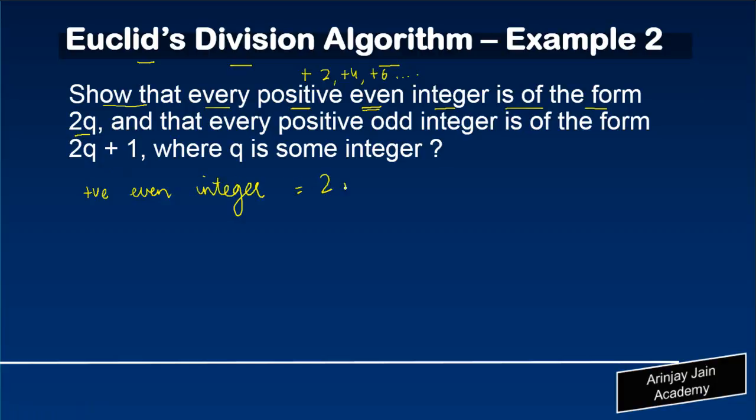This you have to prove is of the form 2q, and that every positive odd integer is of the form 2q + 1, where q is some integer.